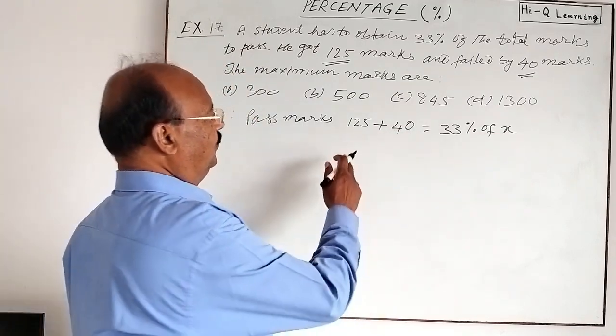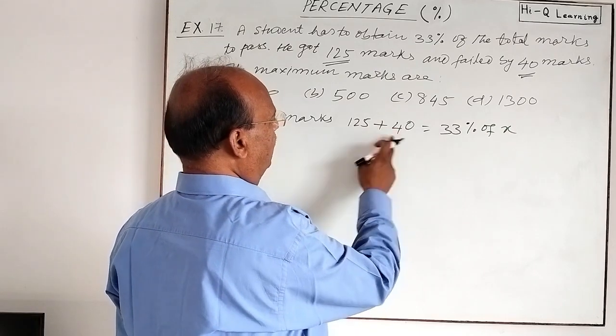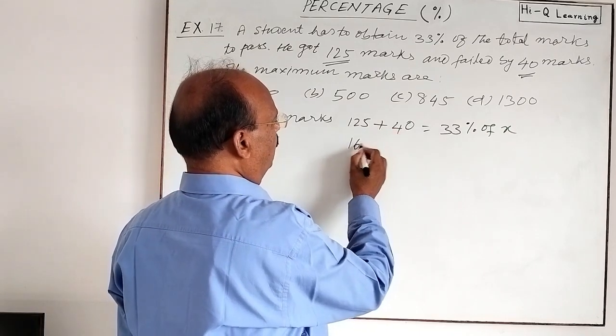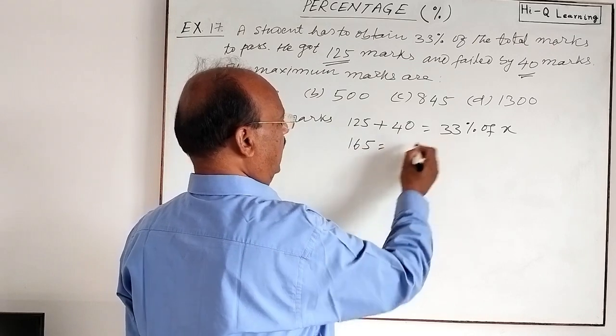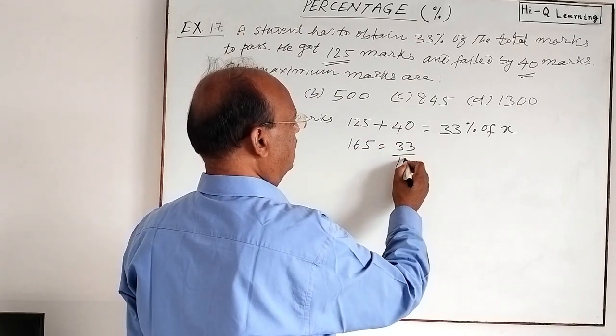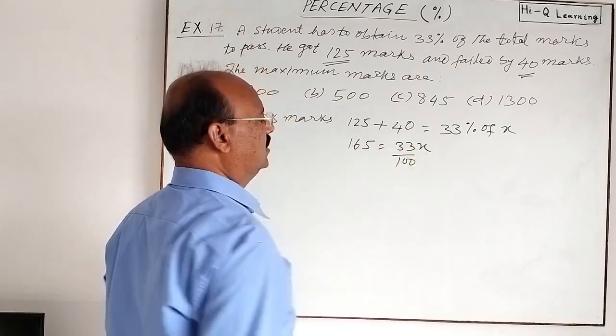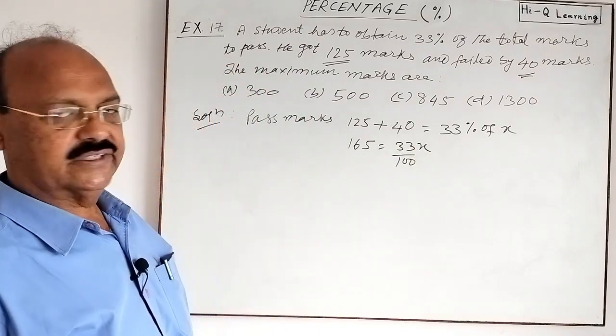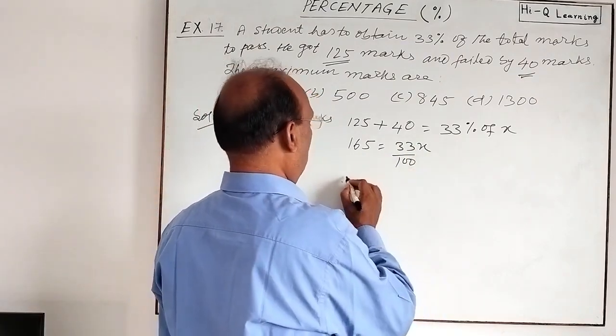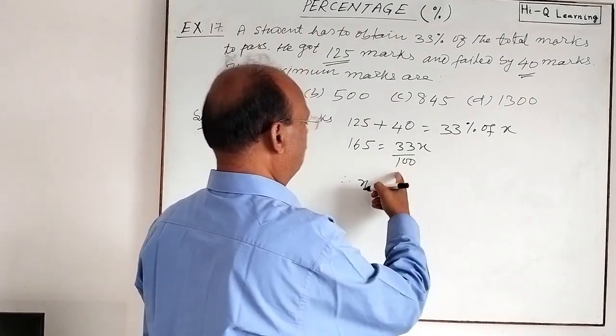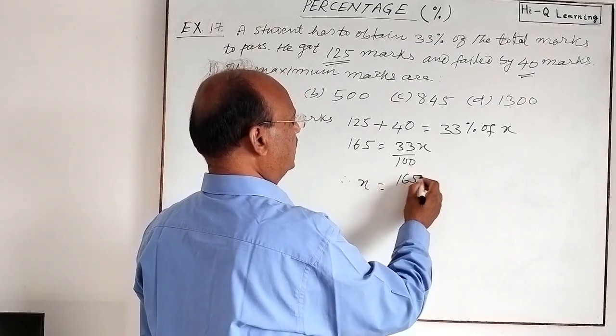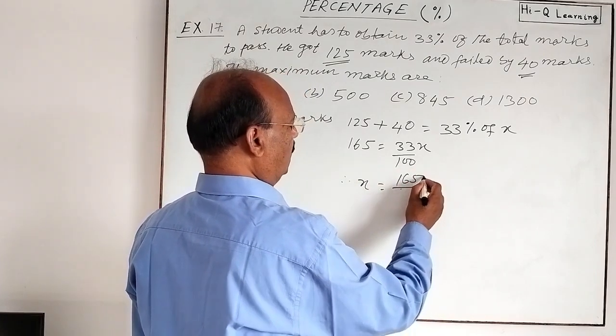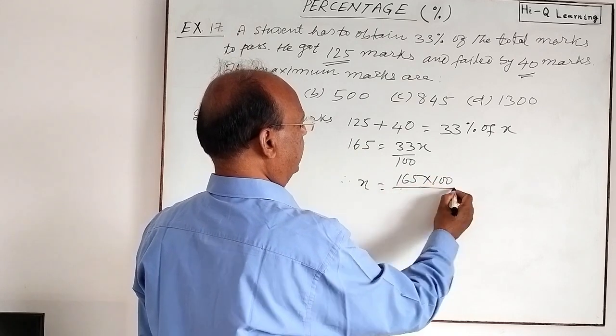So simplify it. In the left hand side this is 165 and right hand side 33 percent of x. We'll find value of x here. And therefore x is equal to, by cross multiplication, 165 into 100 divided by 33.